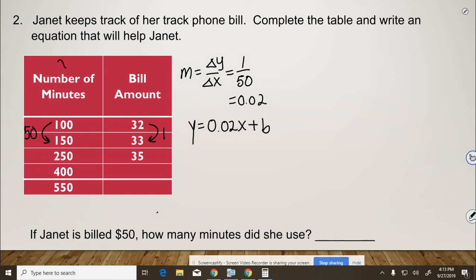So we have y equals 0.02x plus b. Now remember, number of minutes is our x. The bill amount is our y, because x is what we call the independent variable, and y is the dependent variable. The cost of the bill is dependent on the number of minutes that she uses on her track phone. So now we're going to plug in 100 for the x and 32 for the y.